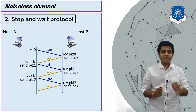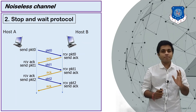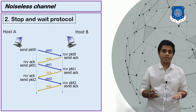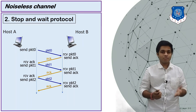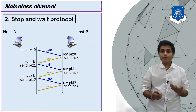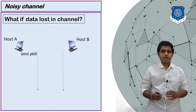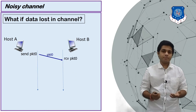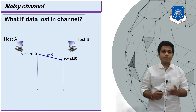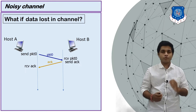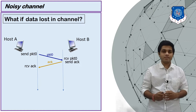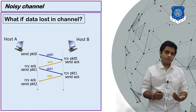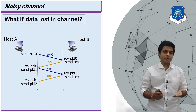In this example we assume the channel is noiseless, meaning every packet sent by A is received by B and every acknowledgement sent by B is received by A. But that is not the case in practical scenarios because channels are always noisy. In a noisy channel example: A sends packet 0, B receives it and sends an acknowledgement, A receives it and sends packet 1, B receives packet 1 and sends its acknowledgement, A receives it and prepares to send packet 2.